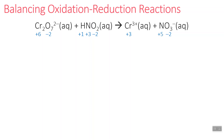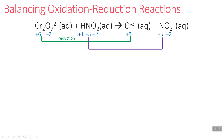Now we can look at how oxidation states change to figure out what's being oxidized and what's being reduced. Chromium goes from plus six to plus three — its oxidation state decreases, so that's the reduction half reaction. Nitrogen goes from plus three to plus five — its oxidation state increased, so that is our oxidation half reaction. We'll now write and balance each half reaction.